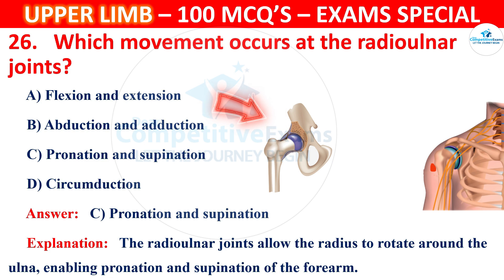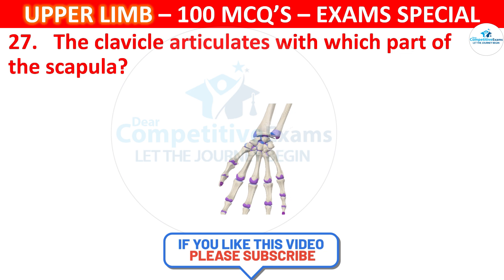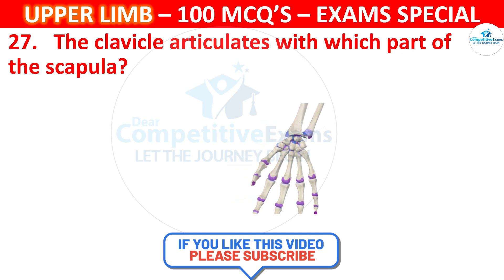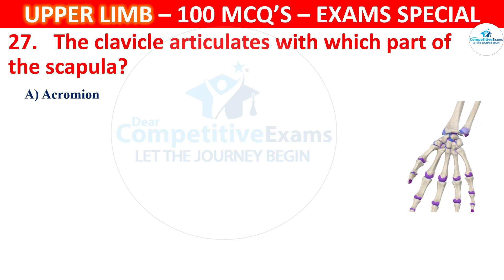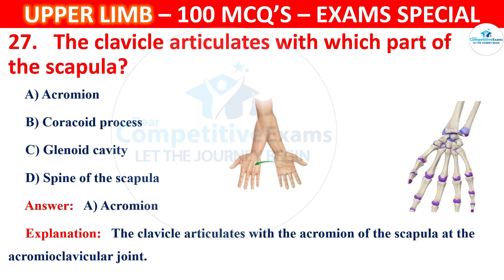Question number 27: The clavicle articulates with which part of the scapula? Options: acromion, coracoid process, glenoid cavity, or spine of the scapula. The correct answer is A, acromion. The clavicle articulates with the acromion of the scapula at the acromioclavicular joint.